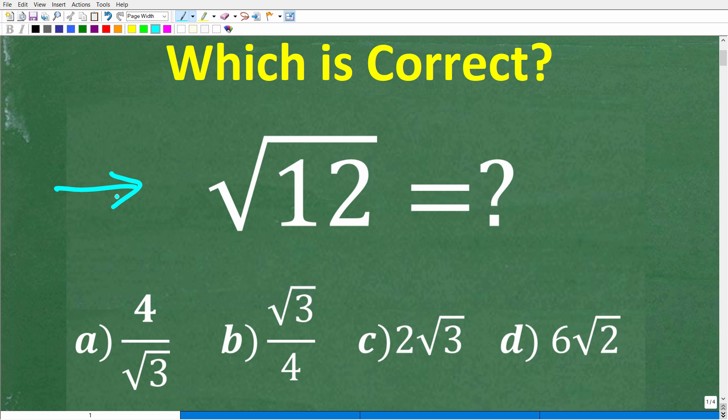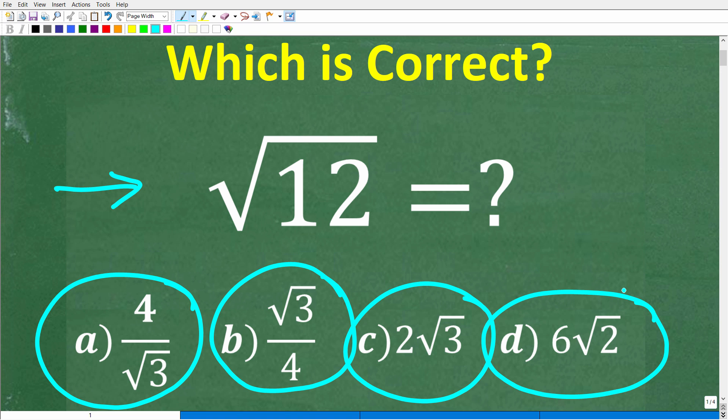Well, we do have a multiple choice question here. Let's take a look at our answers. So A is 4 over the square root of 3. B is the square root of 3 over 4. C is 2 times the square root of 3. And D is 6 times the square root of 2.